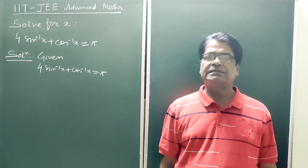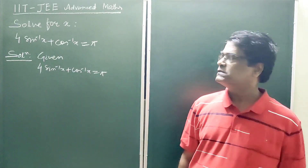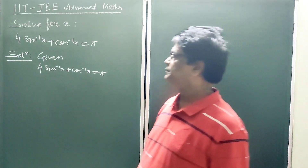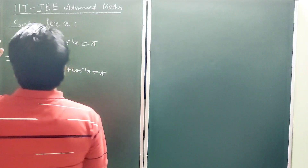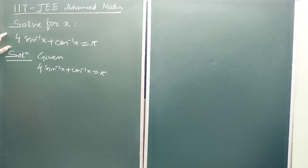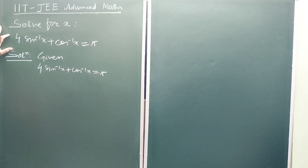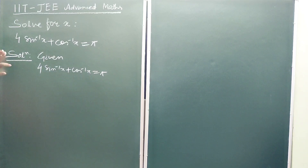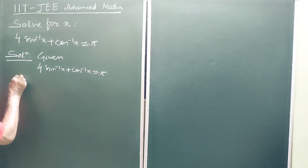Hello students, let us solve an important problem for IIT JEE. The question is: solve for x, where 4·sin⁻¹(x) + cos⁻¹(x) is equal to π. You have to find the value of x.